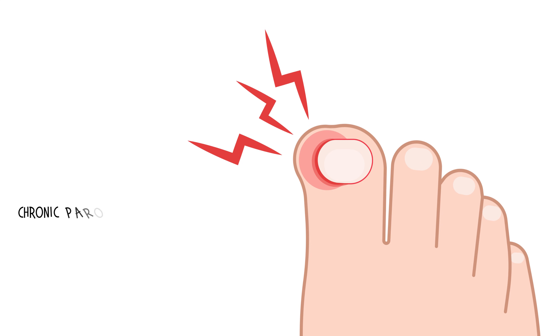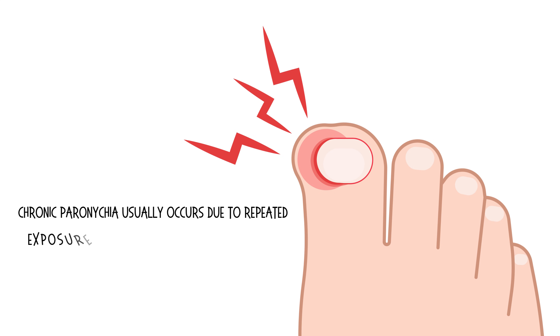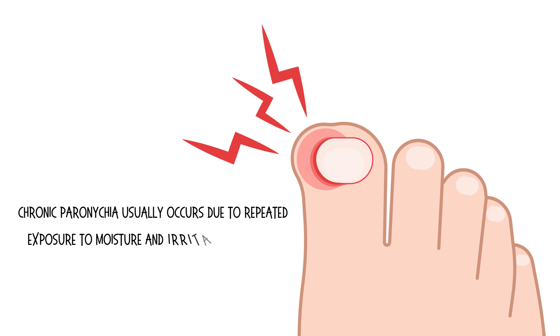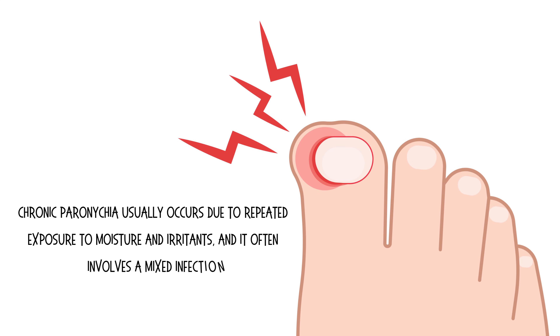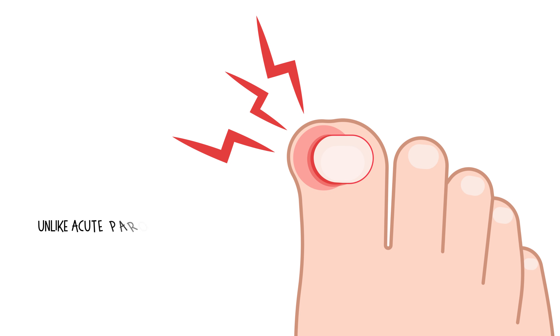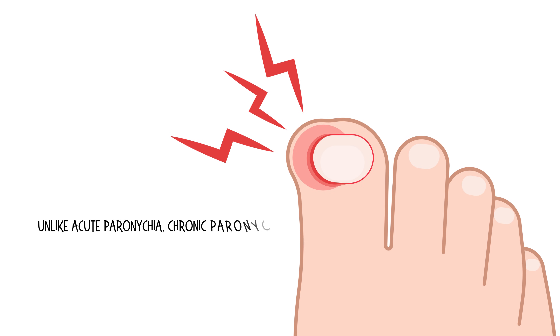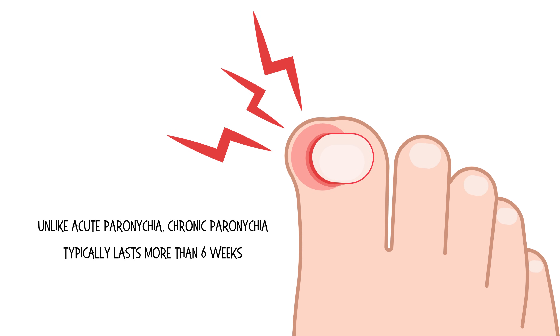Chronic paronychia usually occurs due to repeated exposure to moisture and irritants, and it often involves a mixed infection. Unlike acute paronychia, chronic paronychia typically lasts more than 6 weeks.